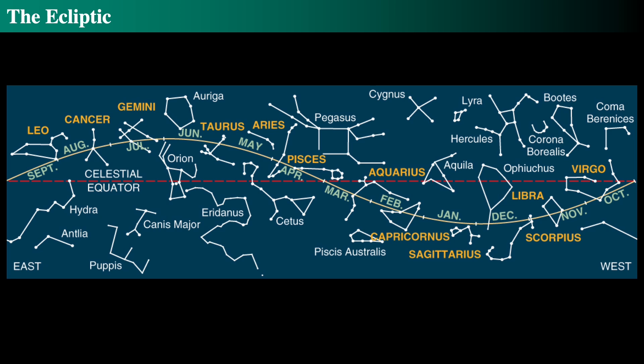Looking at the zodiacal constellations: in October the sun is in Virgo, November in Libra, December in Scorpius — though most of December it's in Ophiuchus. Sagittarius in January, Capricornus in February, Aquarius in March, Pisces in April, Aries in May, Taurus in June, Gemini in July, Cancer roughly in August, and Leo roughly in September. These all sound very familiar — those are the astrological zodiacal constellations, and that's all that it means.